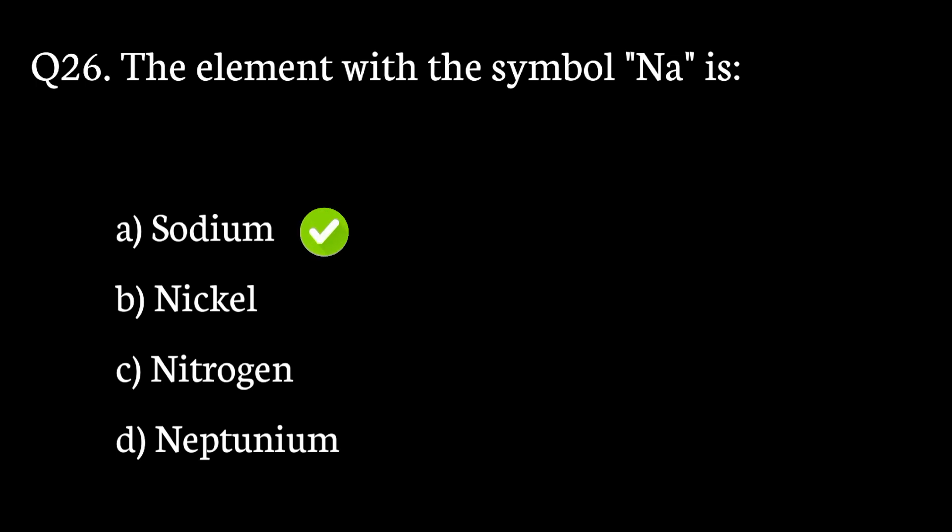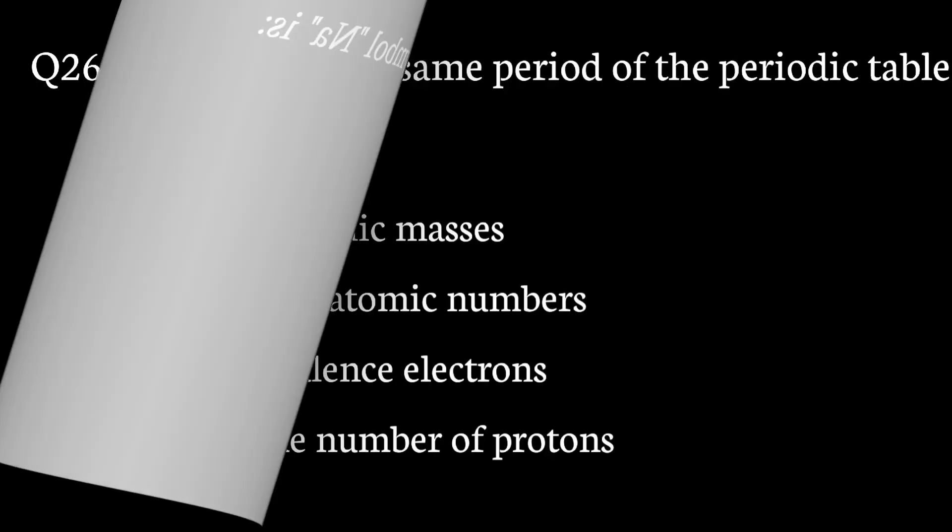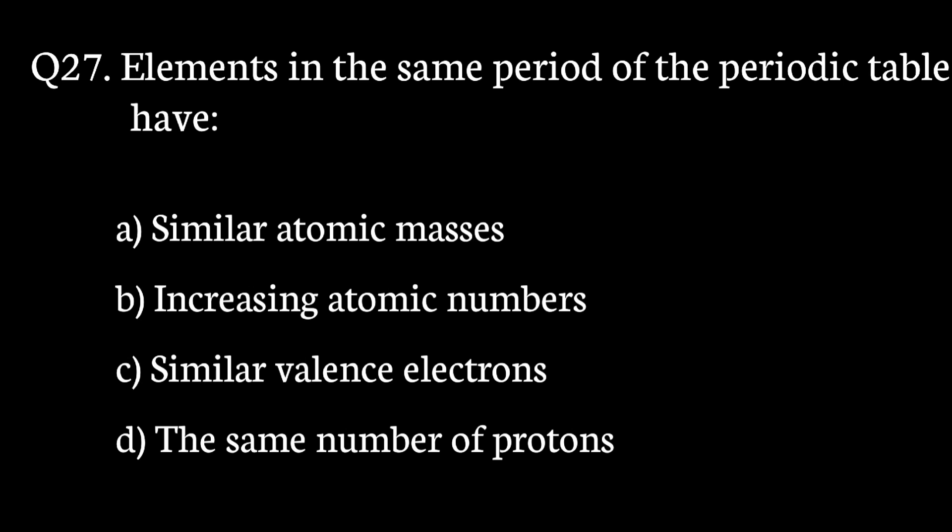Question number 27. Elements in the same period of the periodic table have? The correct answer to that question is option B. Increasing atomic number.